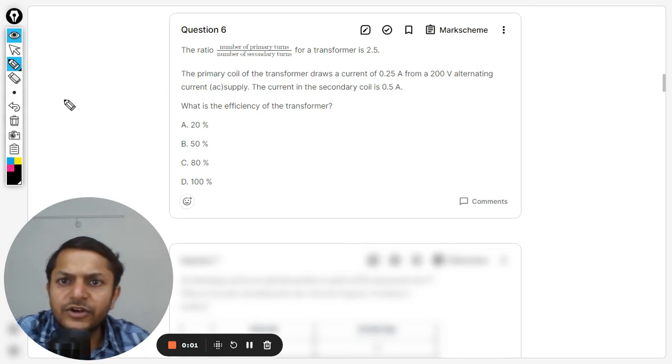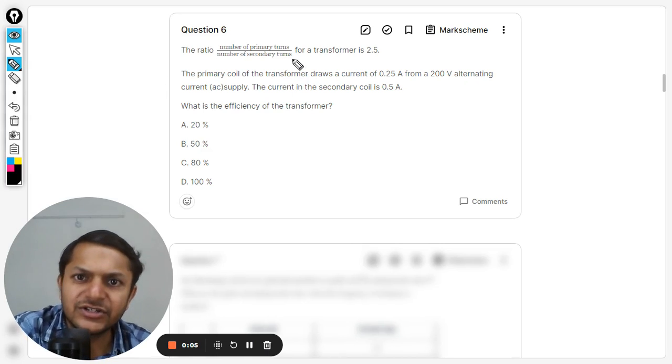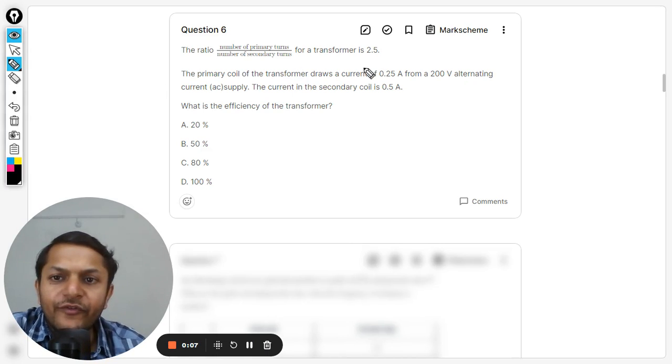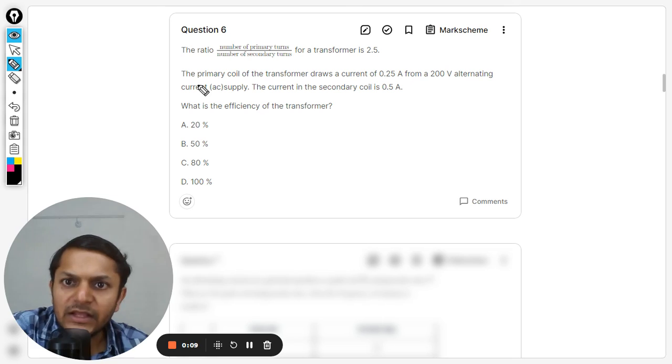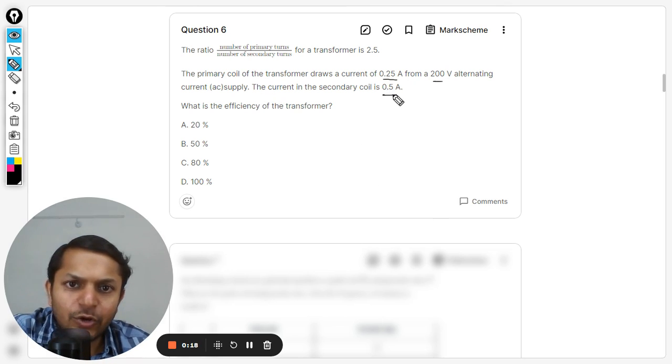Students, let us see what is there in this question. The ratio of the number of primary turns divided by number of secondary turns of a transformer is 2.5. The primary coil of the transformer draws a current of 0.25 ampere from 200 volt alternating current supply. The current in the secondary coil is 0.5.